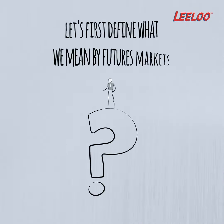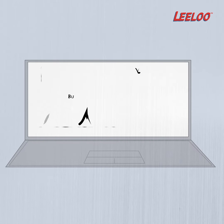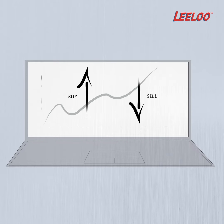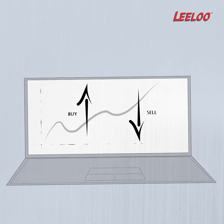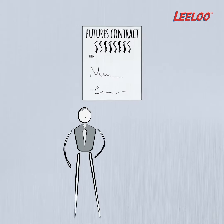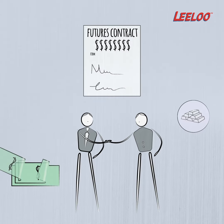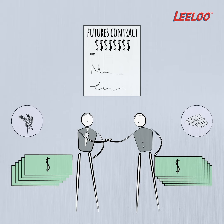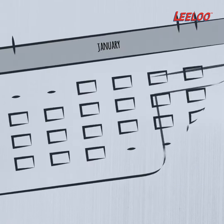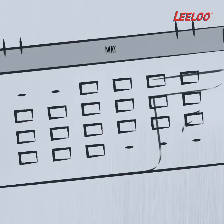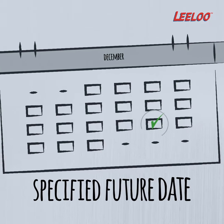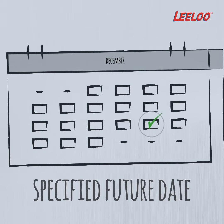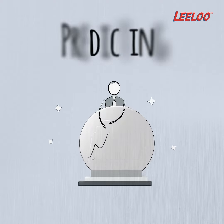Let's first define what we mean by futures markets. They are arenas where futures contracts are bought and sold. A futures contract is an agreement between two parties to buy or sell a particular asset or financial instrument at a predetermined price, but the actual exchange will take place at a specified future date. It's like making a prediction today on the price of an asset in the future.